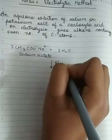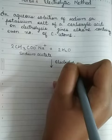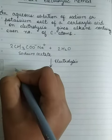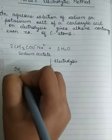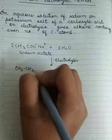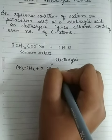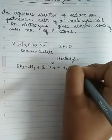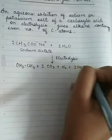So when you do electrolysis, what are the products obtained? You will obtain CH3-CH3 plus 2 moles of CO2 plus H2 plus 2 moles of NaOH.